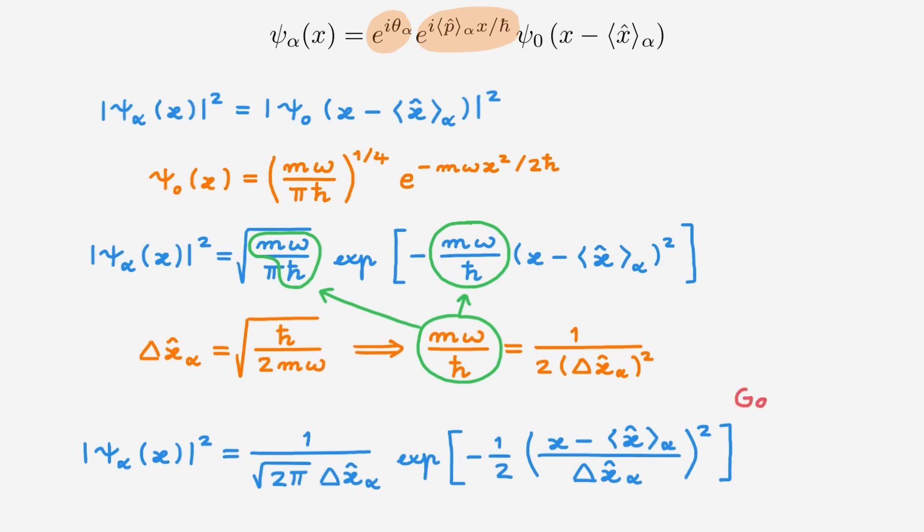We can now clearly see the form of the coherent state wave function. It is a Gaussian centered at the expectation value of the position operator, and whose width is equal to the root mean square deviation of the position operator. This result makes sense: the coherent state wave function is essentially the displaced ground state of the quantum harmonic oscillator, and the ground state is itself a Gaussian.